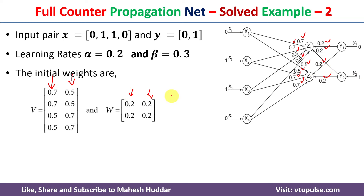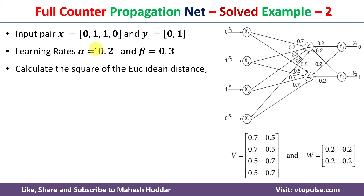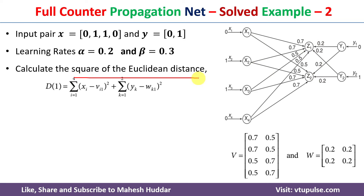Now we have been given the input pair. We need to calculate the Euclidean distance of this input pair to the cluster units, and then based on the distance we assign the input pair to one of the cluster units. To calculate the Euclidean distance we use this formula: d1 equals the summation...